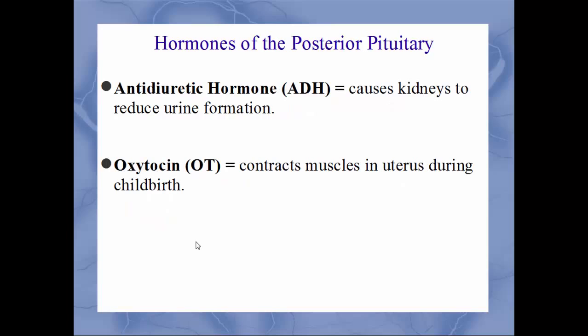For the posterior lobe of the pituitary, there are only two hormones. Antidiuretic hormone (ADH) causes the kidneys to reduce urine production — helping you retain water. Oxytocin (OT) stimulates uterine muscle contractions during childbirth; a synthetic form called Pitocin is used to induce labor. On a test, you must specify 'posterior pituitary gland' for both of these hormones.